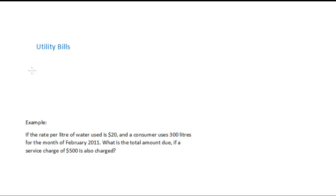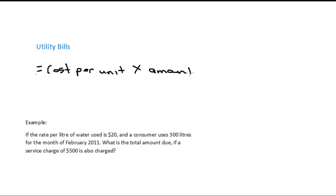Normally it's determined by multiplying the cost per unit used by the amount of units used. That's how they determine the amount that you pay. And that amount is the amount before they add a service charge or if they charge interest or whatever.